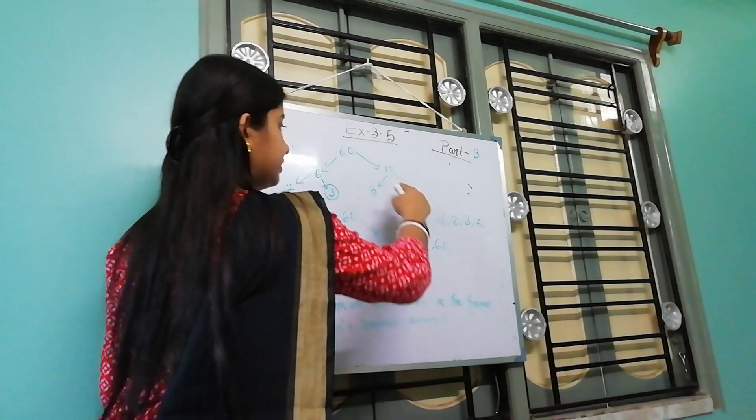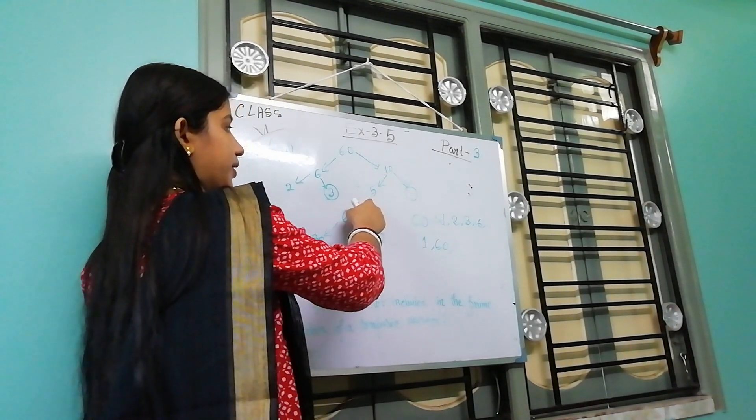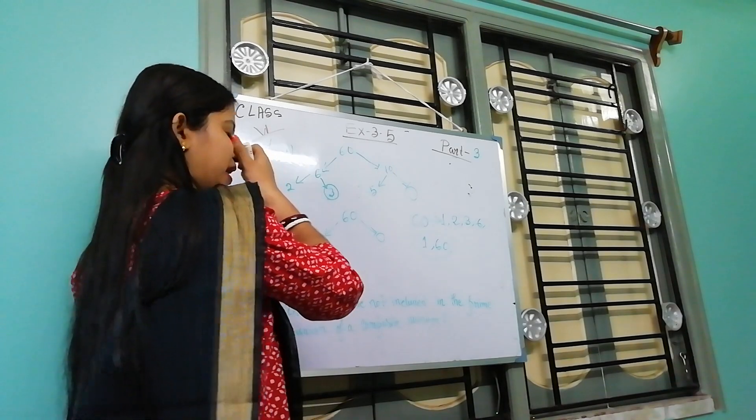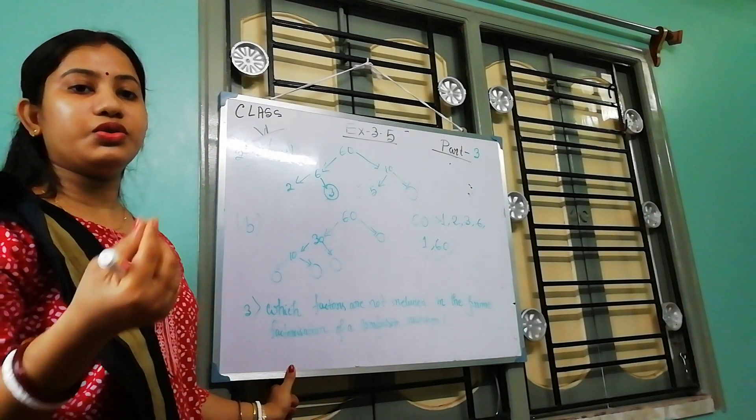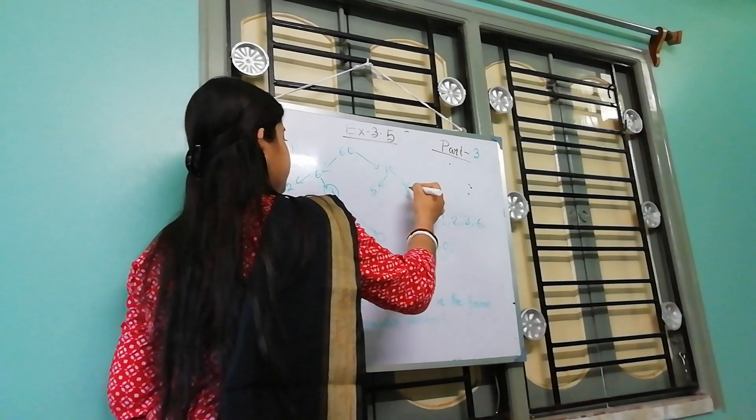Now here this is 10, and this is 5. If we divide 10 by 5, then we get 2. That means 5 into 2 is 10. So here this is 2.